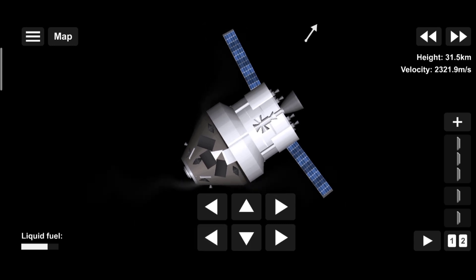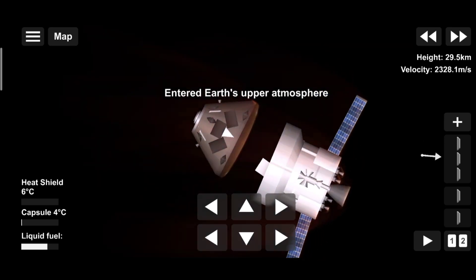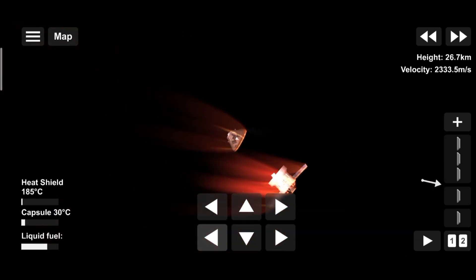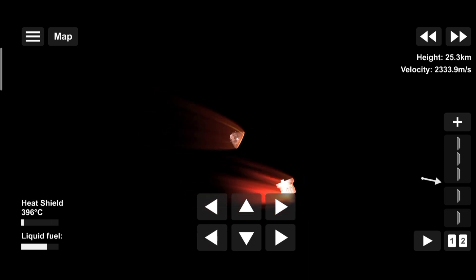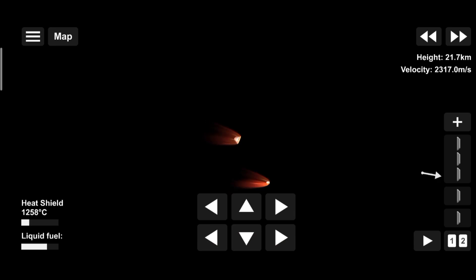As they near the end of this journey, the service module is released, and the crew module is oriented heat shield first. Entering Earth's atmosphere at 25,000 miles per hour, the friction of air slows Orion considerably, while also subjecting it to temperatures of 5,000 degrees.